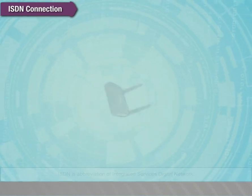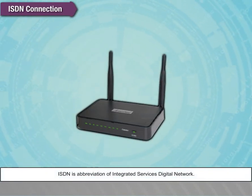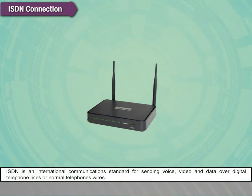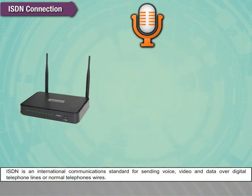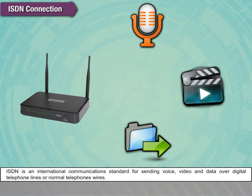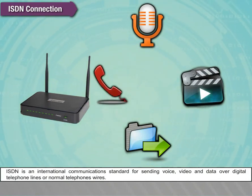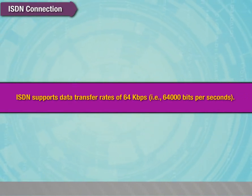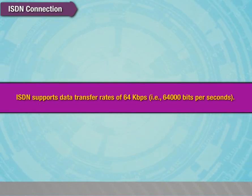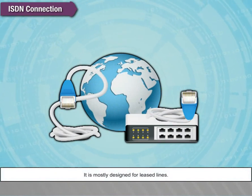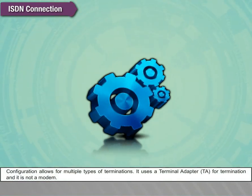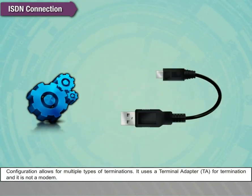ISDN connection: ISDN is the abbreviation for Integrated Services Digital Network. It is an international communication standard for sending voice, video, and data over digital telephone lines or normal telephone wires. ISDN supports data transfer rates of 64 kbps (64,000 bits per second). It is mostly designed for leased lines. Configuration allows for multiple types of terminations and it uses a terminal adapter (TA) for termination — it is not a modem.